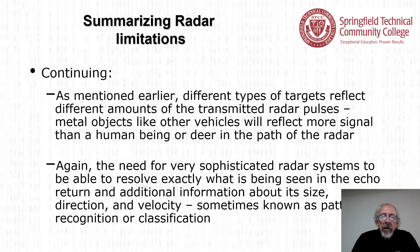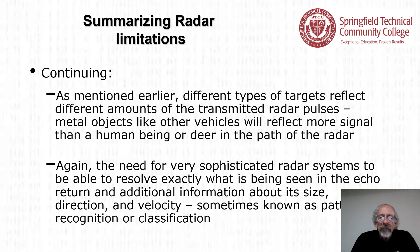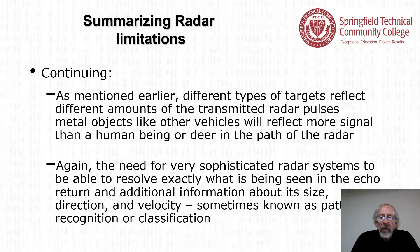Radar return does not correlate very well — it's difficult to distinguish exactly what the return signal represents. A very good radar reflector gives a sharp pulse, but a lot of other material gives a garbled mess, which is called grass or clutter. Different types of targets reflect different amounts of the transmitted radar pulses. Metal objects like vehicles reflect more signal than a human being or deer. Very sophisticated radar systems are needed to resolve size, direction, and velocity — sometimes known as pattern recognition or classification.